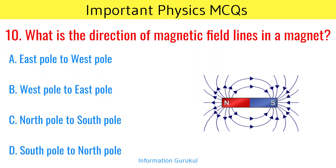What is the direction of magnetic field lines in a magnet? North pole to south pole.